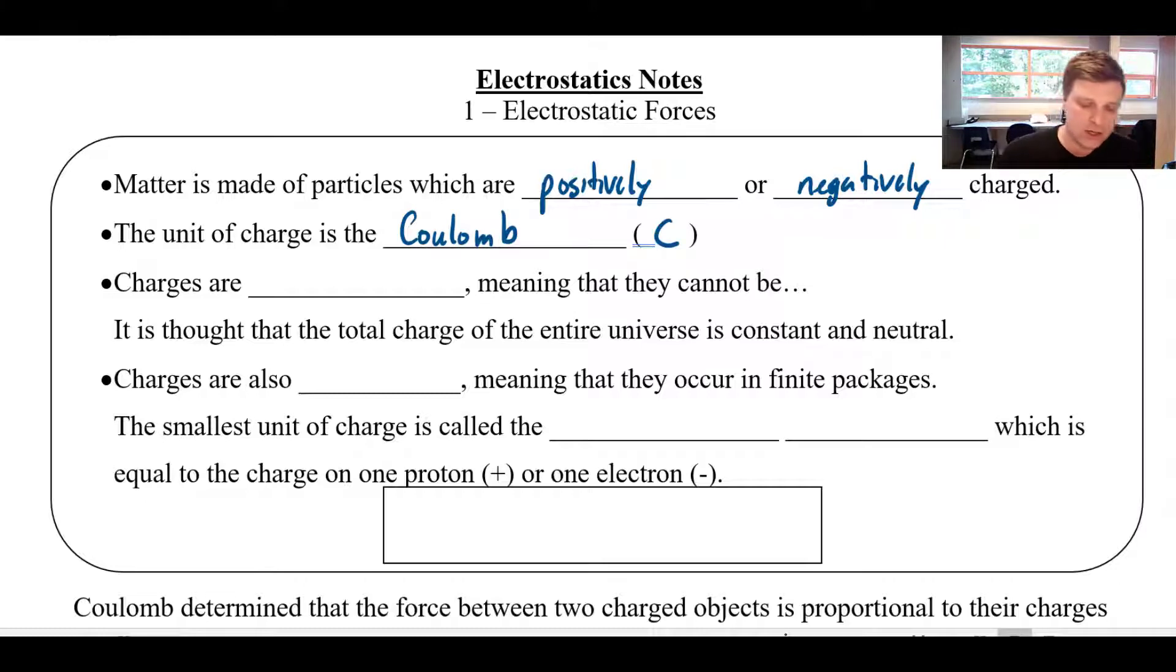Now charges are conserved. They are a conserved quantity, which means they cannot be created or destroyed. So we believe that whatever amount of charge the universe was created with, it's fixed. And overall it's probably neutral.